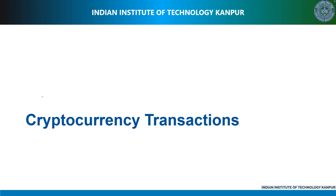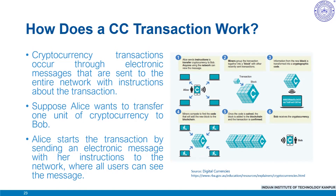In this video, we'll understand cryptocurrency transactions with the help of a simple example. Cryptocurrency transactions occur through electronic messages sent to the entire network with instructions about the transaction — including electronic addresses of the parties involved, the quantity of currency to be traded and the timestamp. Suppose Alice wants to transfer one unit of cryptocurrency to Bob. Alice starts the transaction by sending an electronic message with instructions to the network where all users can see the message.